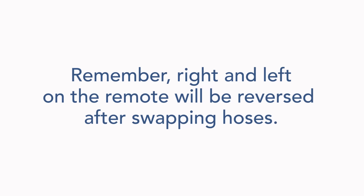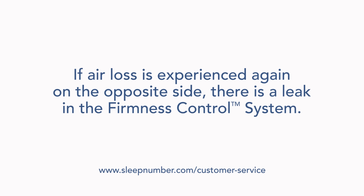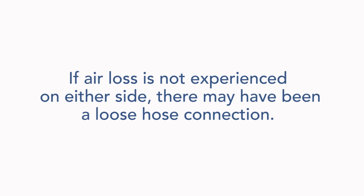Right and left on your remote will be reversed after swapping the hoses. Sleep on the bed for a few nights or until you notice air loss again. If air loss is experienced again on the same side of the bed, the leak is in the air chamber. If it is on the opposite side, there is a leak in the firmness control system. Contact customer service to order your replacement part. If neither chamber feels softer over time, you may have had a loose connection that was fixed when the hoses were switched. Switch the hoses back to their correct positions and continue to use the bed as usual.